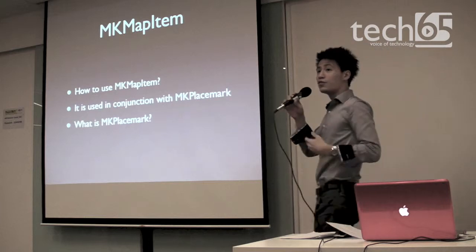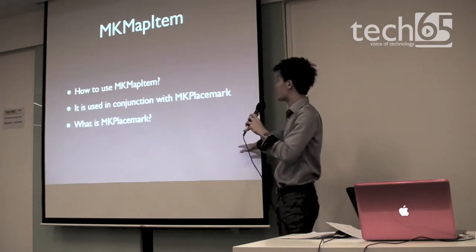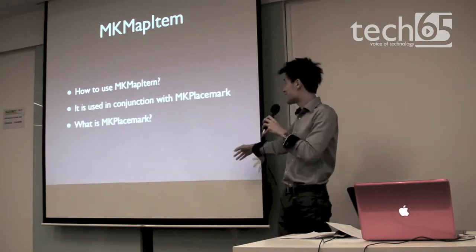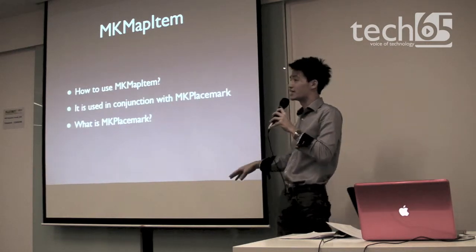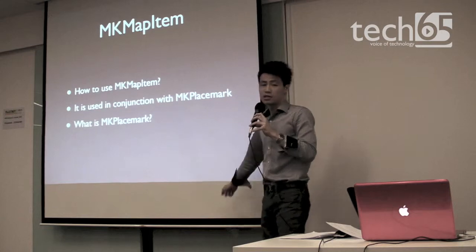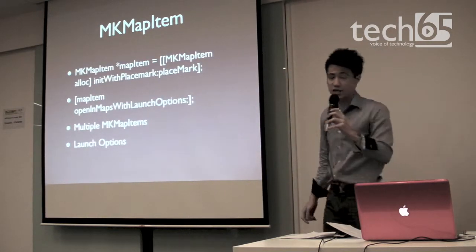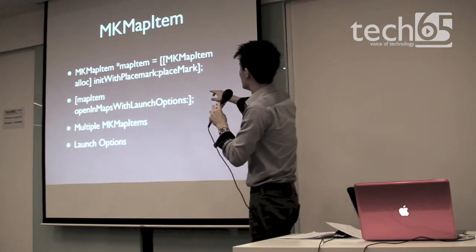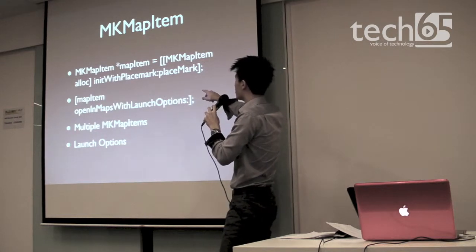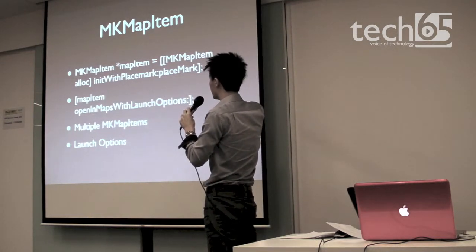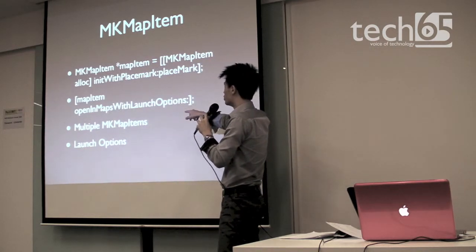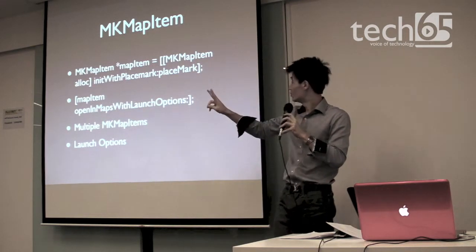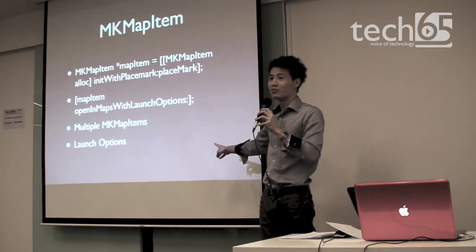For developers, how do you use MKMapItem? Very simply, using it in conjunction with MKPlacemark. MKPlacemark is a class that lets you store location coordinates as well as an information dictionary. In code, you first create an instance of your map item, then use the built-in method initWithPlacemark, pass in whatever placemark you've previously created, and then call mapItem openInMapsWithLaunchOptions. Two lines of code — and you're able to launch the native Maps application from within your application.